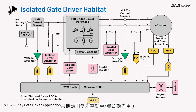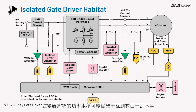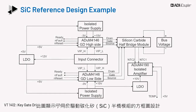Other applications such as EVs and HEVs also have a separate inverter for regenerative braking. Inverter system power levels may range from a few kilowatts to hundreds of kilowatts. The figure shows a block diagram design for driving a silicon carbide SiC half bridge module.